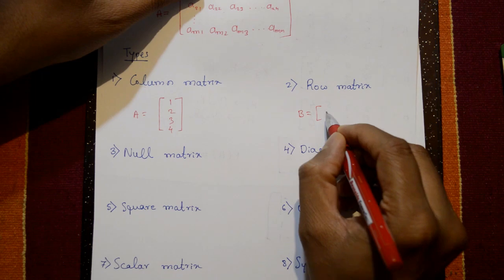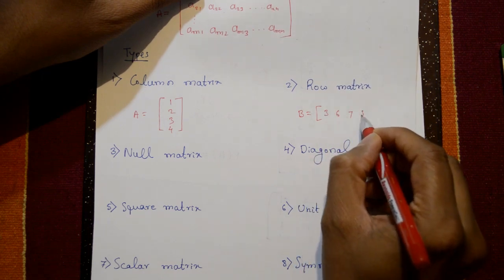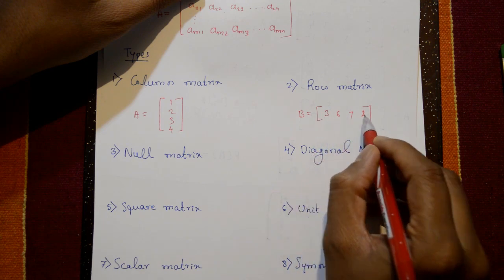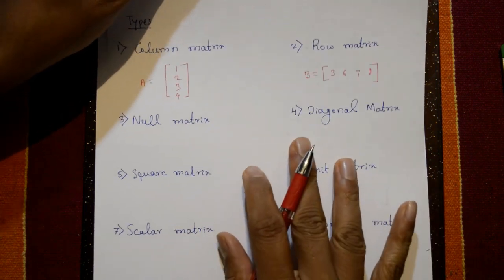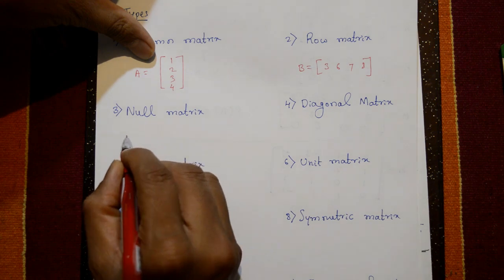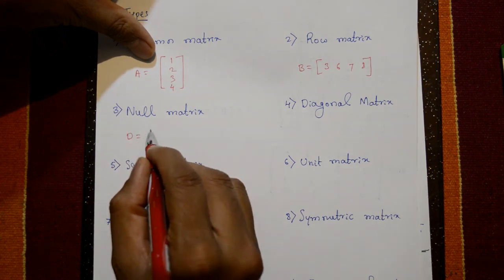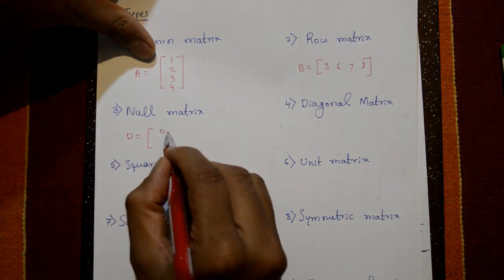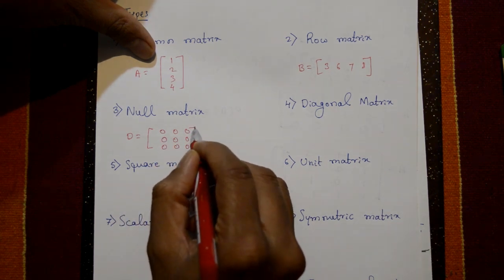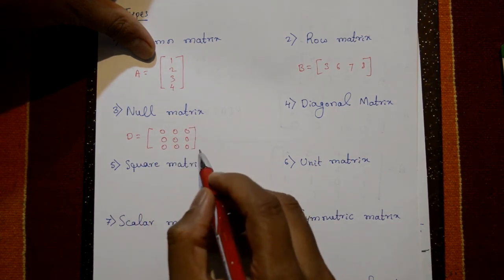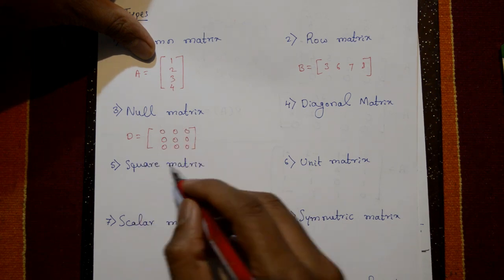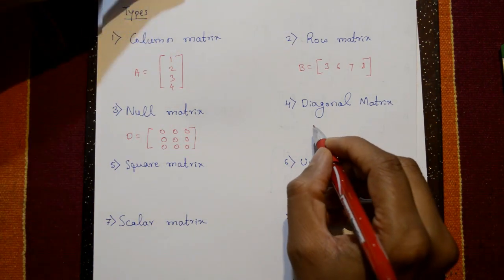Next is a row matrix. Take B equal to [3, 6, 7, 8]. A matrix with any number of columns but only one row is called a row matrix. Next, D equal to null matrix — all elements are zero, that is a null matrix.